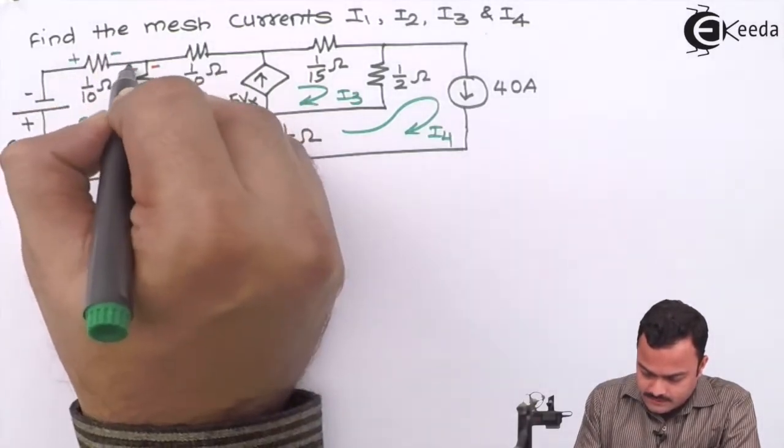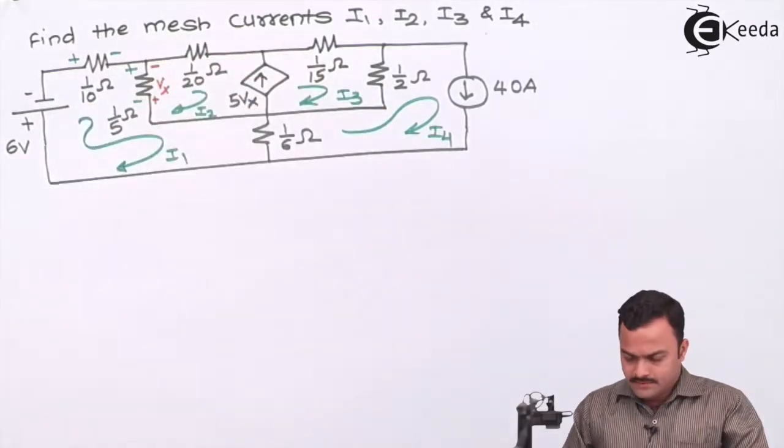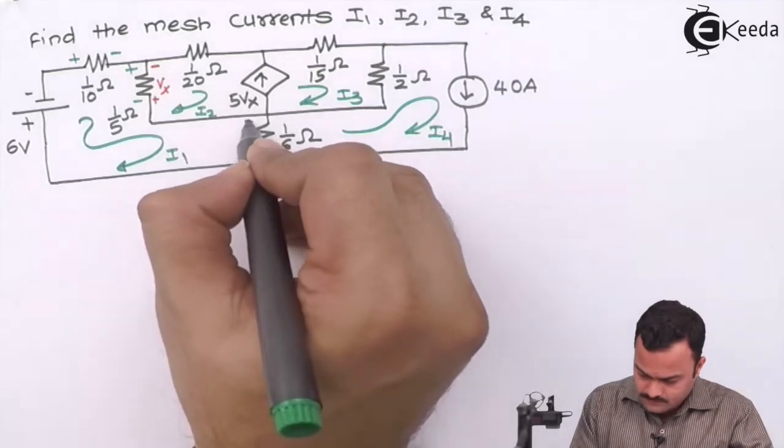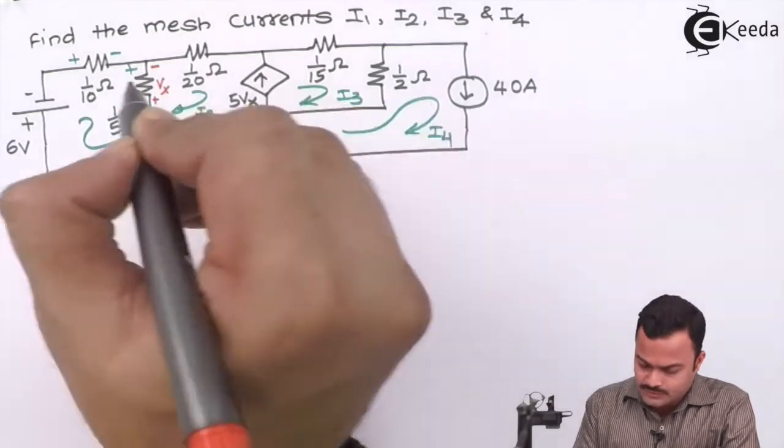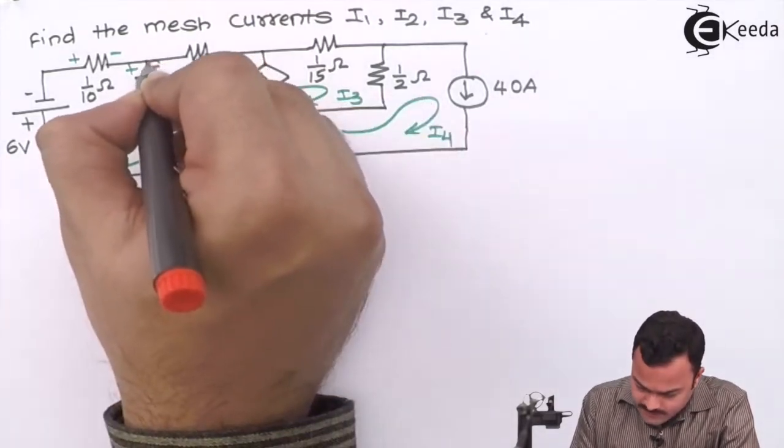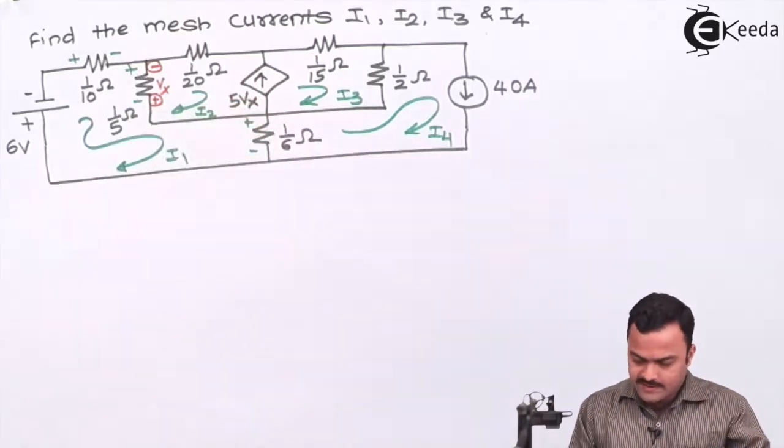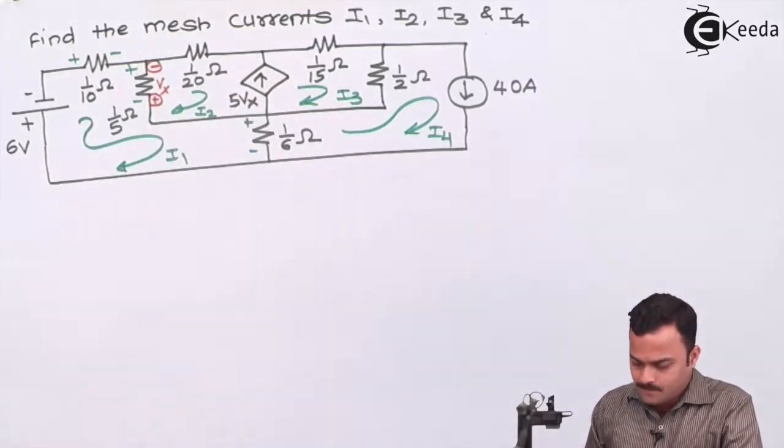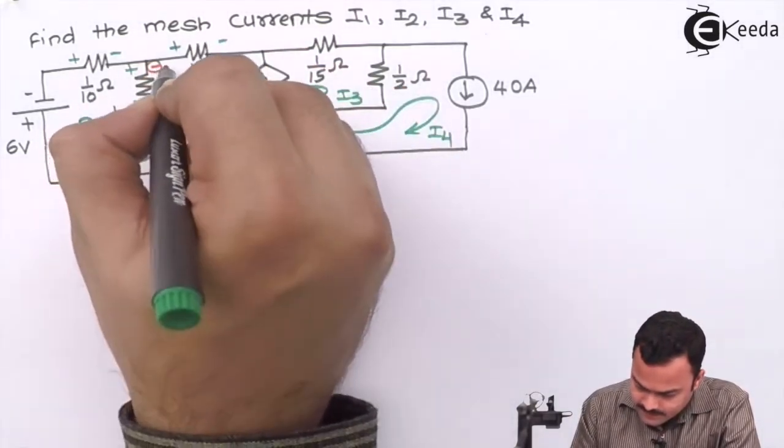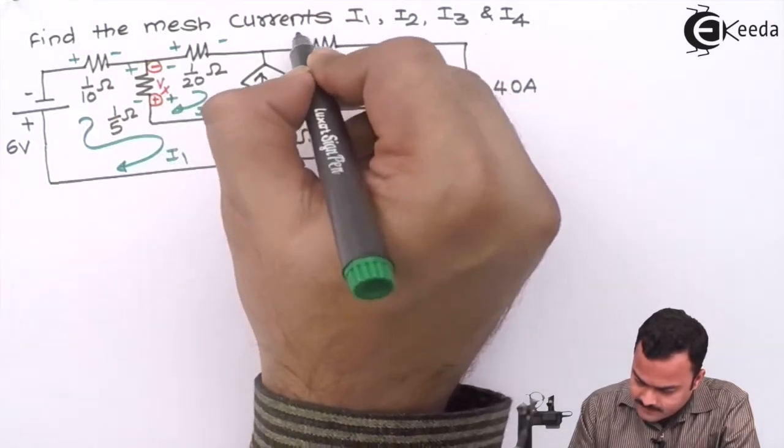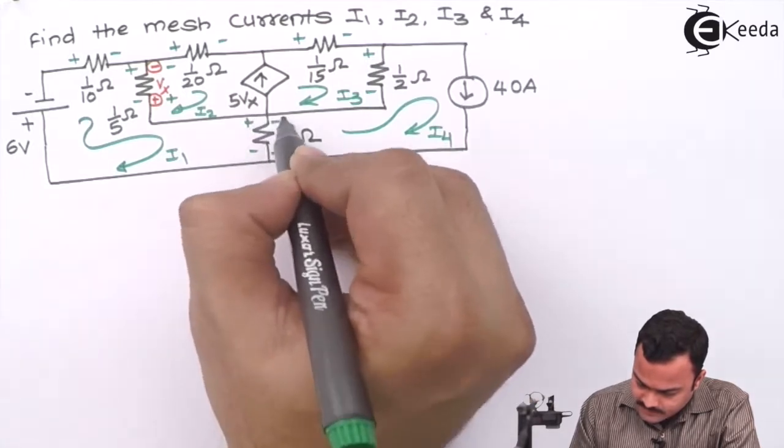We'll have this for i1. Then there is a voltage controlled current source present and the controlled voltage is this vx so we'll encircle it so that we won't get confused by this polarity. Then for i2 plus minus, plus minus. For i3 this is plus minus, plus minus, and this is because of i4.